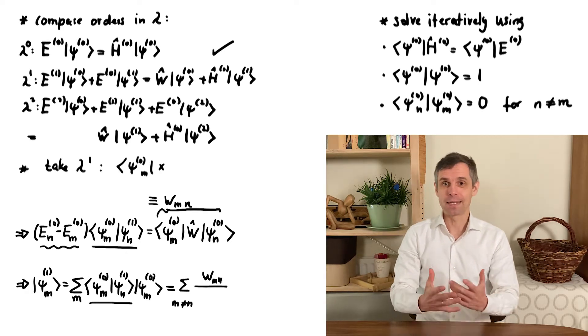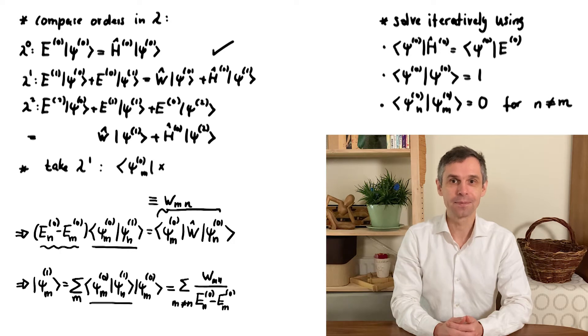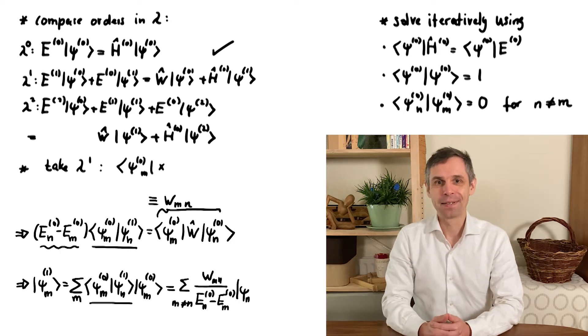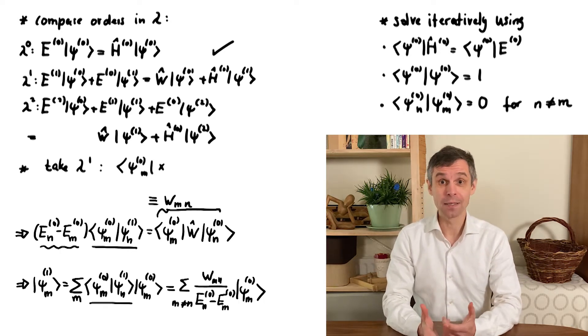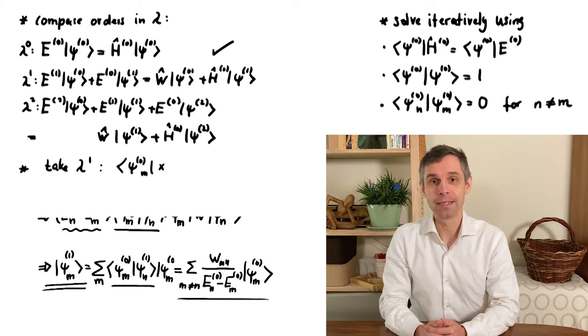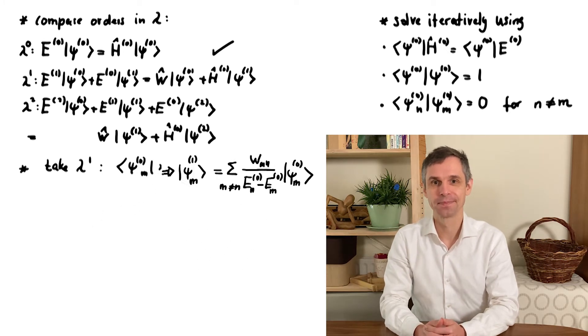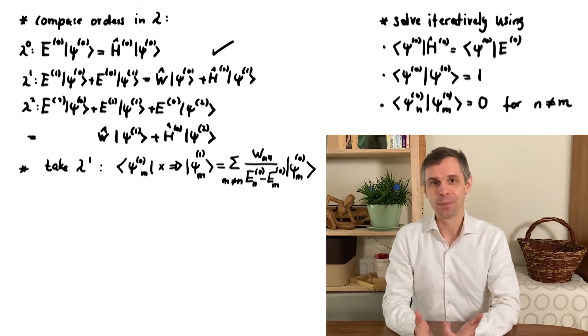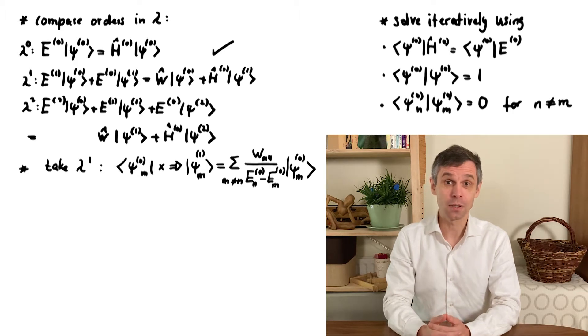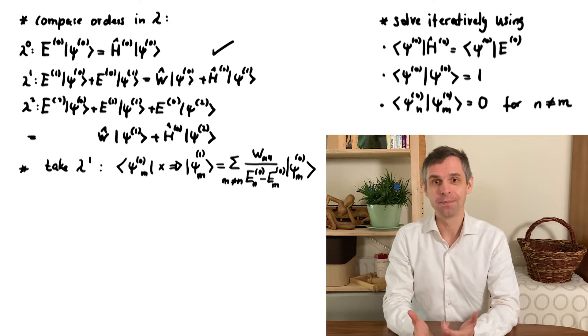Note that the sum here runs over all indices except the index of the state that we're interested in, but the state is of course already included in the zeroth order. What we have written down here is just what we have to add to this to find a better approximation for this perturbed state. According to the denominator, we see that the main contributions tend to come from states that are close in energy. I will come back to this point very soon.